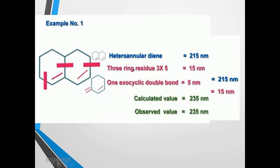Let us see the meaning of ring residue. This is a parent diene which is present in different ring structures — hence, it is an example of heteroannular diene and the base value considered is 250 nanometers. To this basic heteroannular diene, there are carbon atoms attached inside the ring; therefore, each of these is considered as a ring residue. To this double bond, there is an attachment of the carbon structure of the ring — it is a part of the ring, hence it is considered as ring residue.